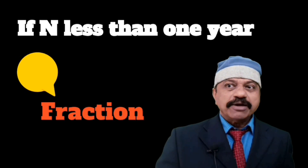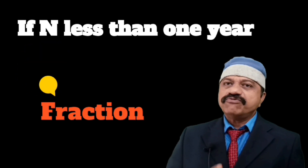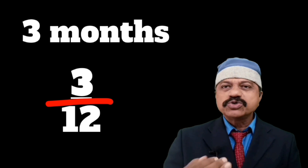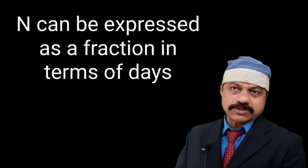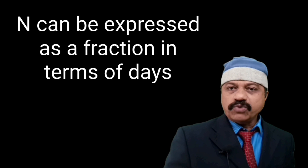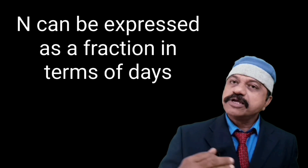N refers to the number of years, and if it is less than 1 year, it will be shown as a fraction. For example, if the period is 3 months, then N is equal to 3 by 12. Another example: if the period is 142 days, then N is equal to 142 divided by 365. That means, if the period cannot be conveniently expressed in terms of months, we can count days and N can be expressed as a fraction in terms of days.